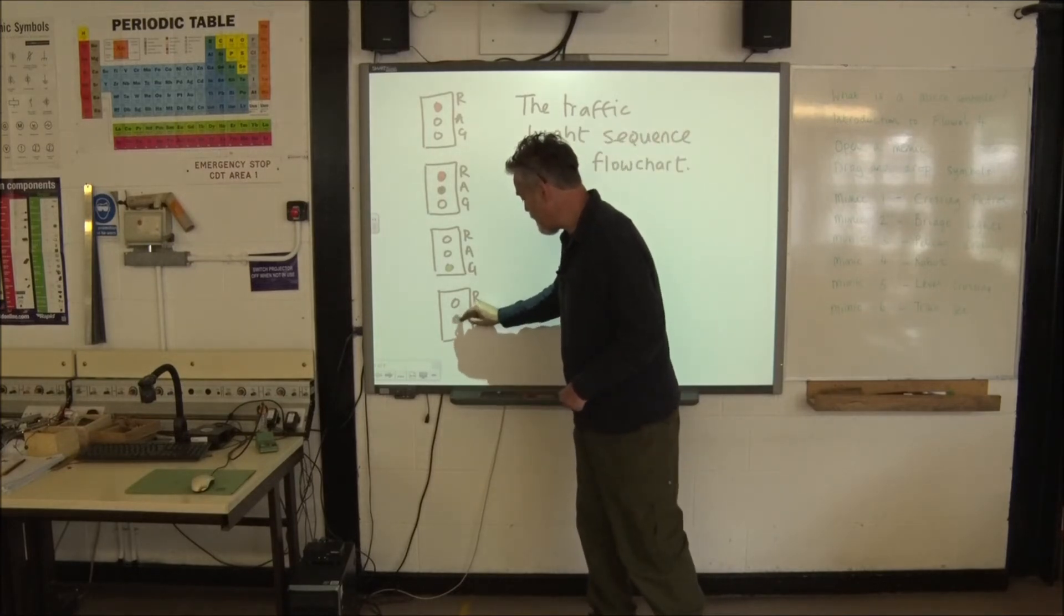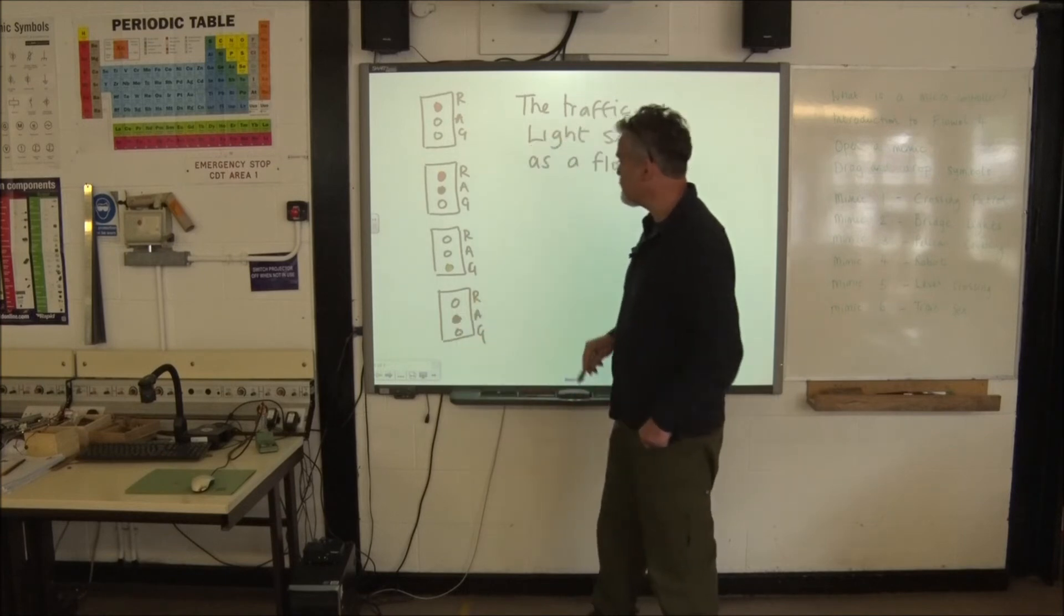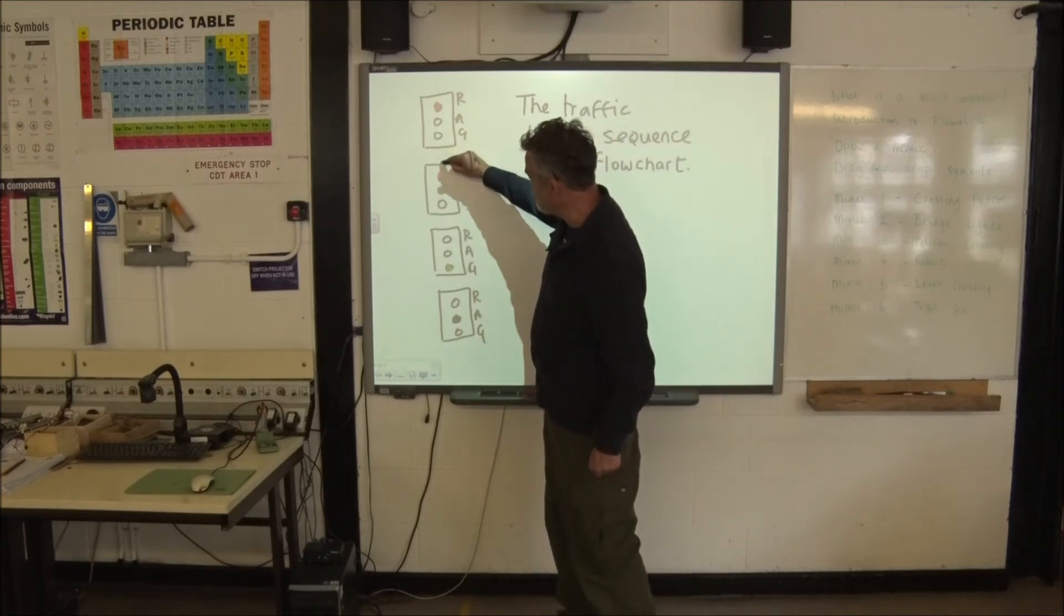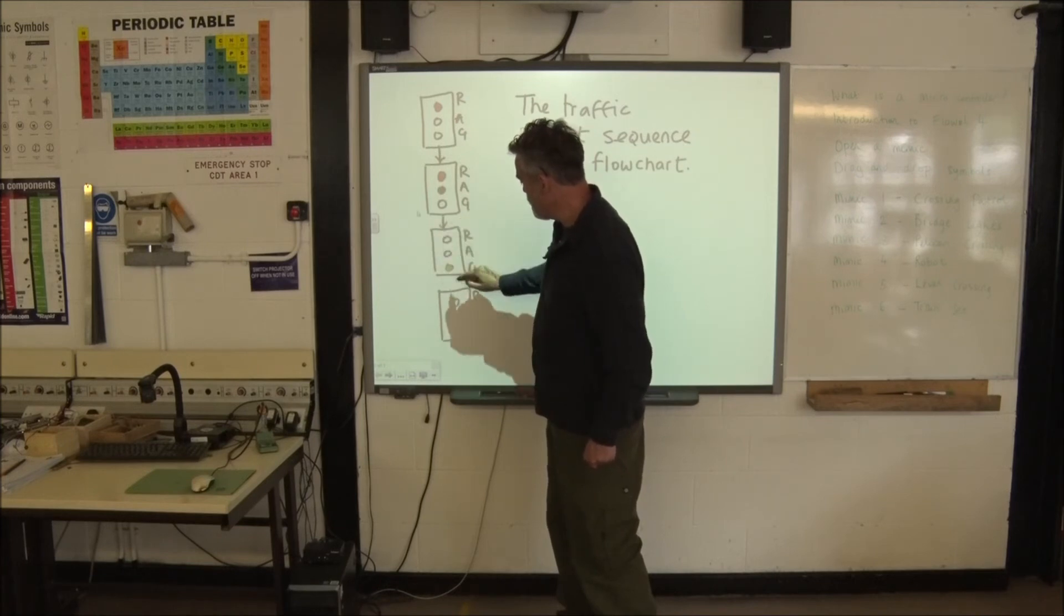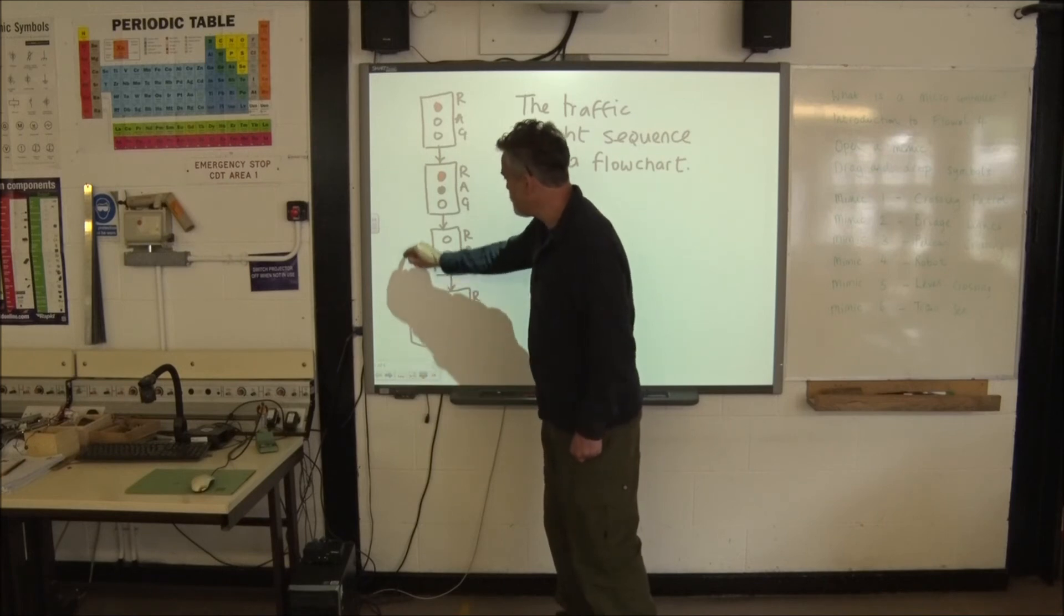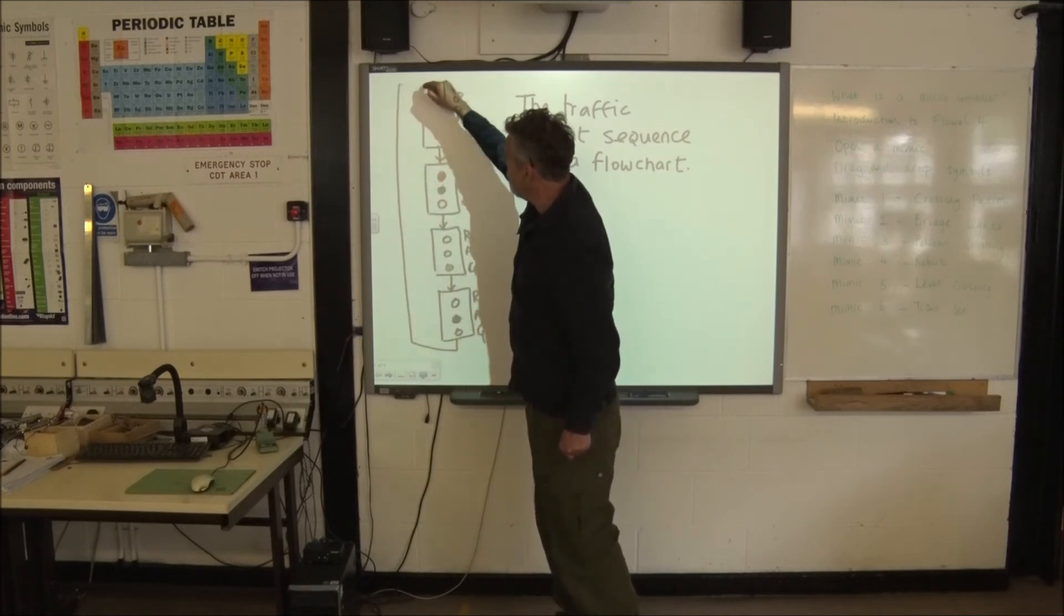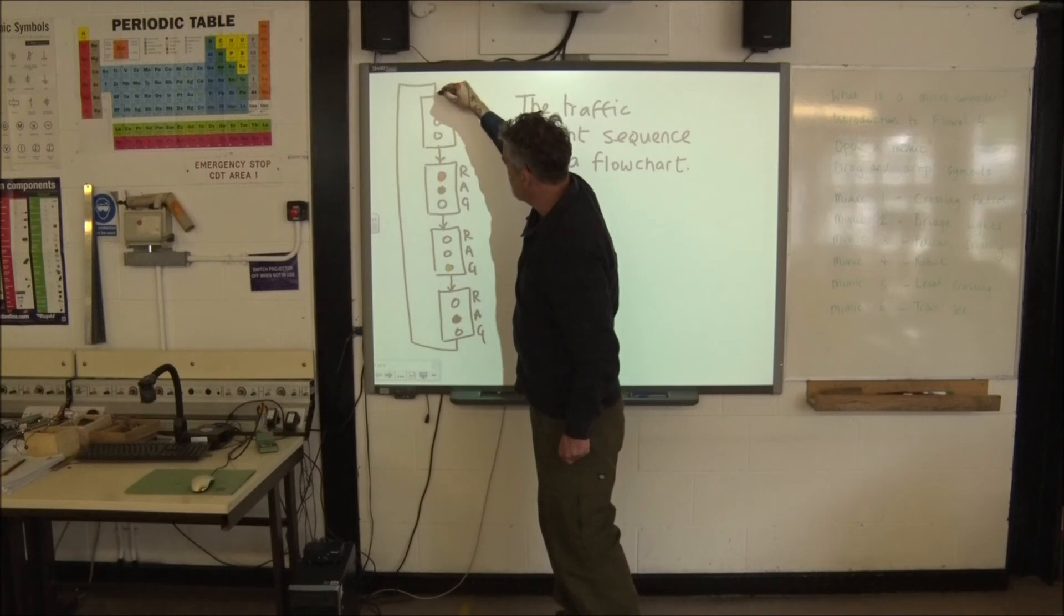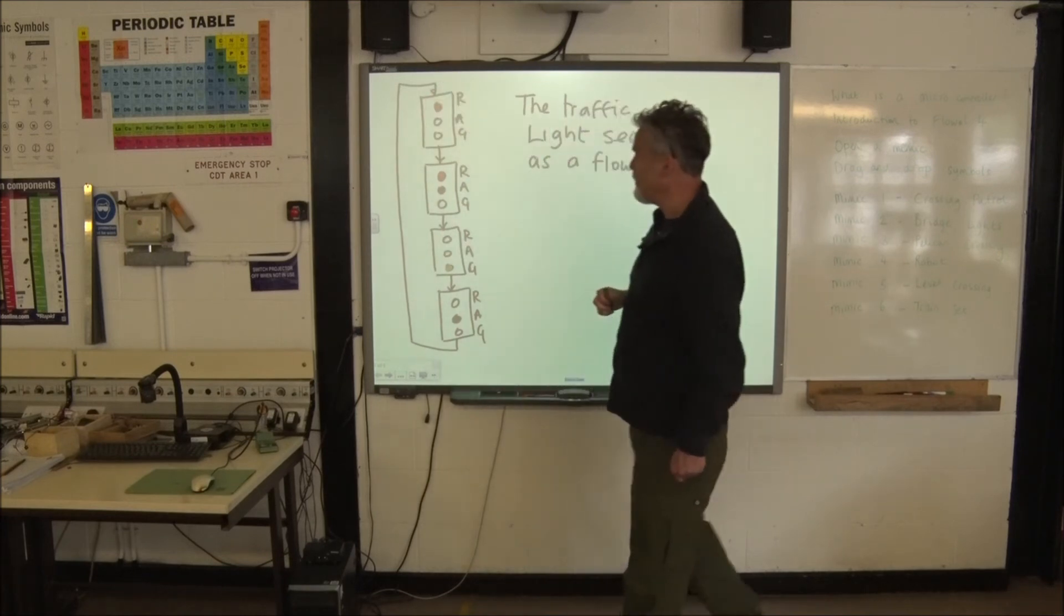Okay, very good. We've correctly identified the sequence. So, in a flow chart we would draw arrows between each of these and at the last one, because we've seen this before in our previous lesson, we could have a loop back to the start to make the sequence run endlessly.